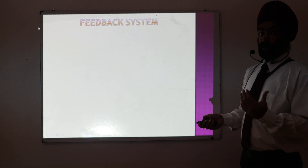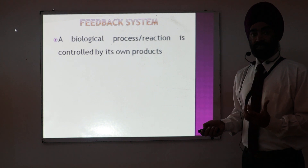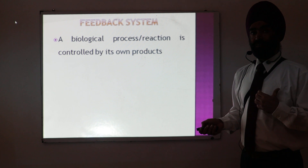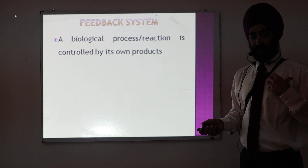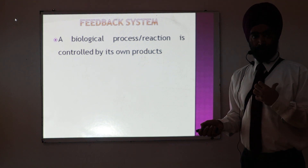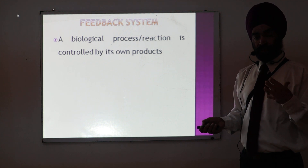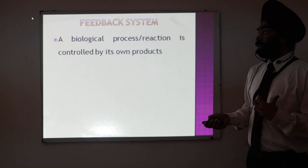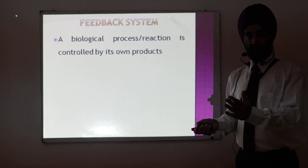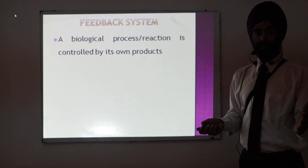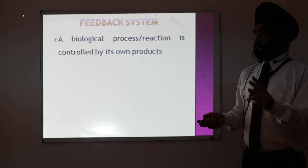Another important thing I want to discuss is the feedback system. A feedback system means that if I'm doing some work, I need feedback so that I can modify my action. All biological actions happening in my body are controlled by something. If I'm driving a car, I'm putting my foot on the accelerator, but simultaneously I also have a foot on the brake. The accelerator and the brake together control the speed.